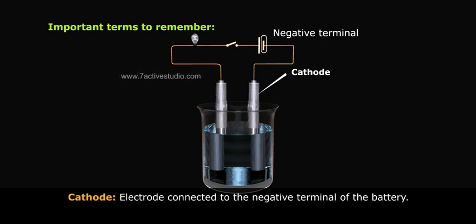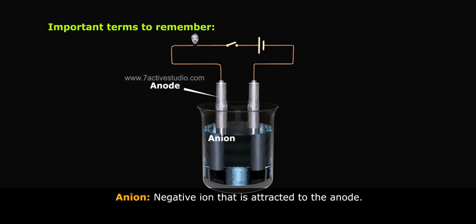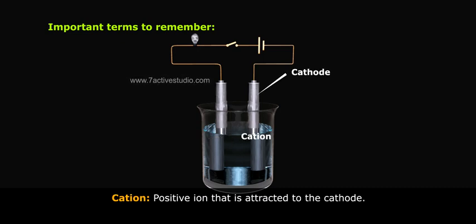Anion: negative ion that is attracted to the anode. Cation: positive ion that is attracted to the cathode.